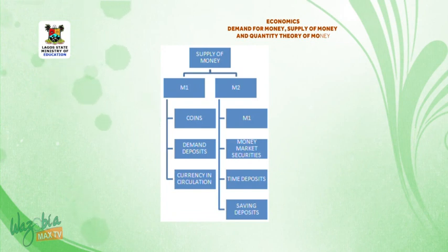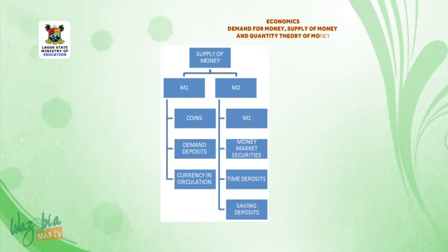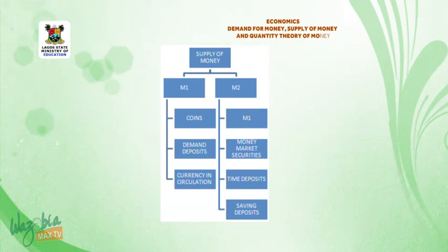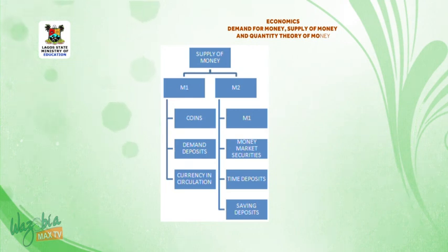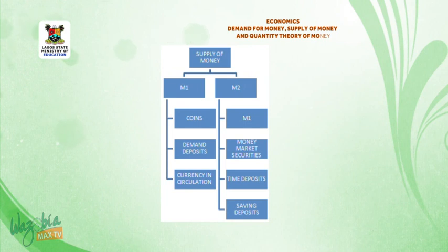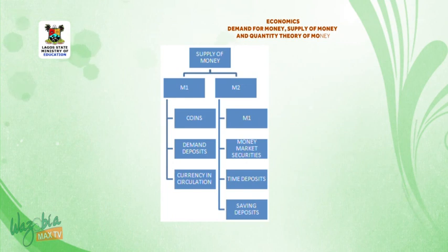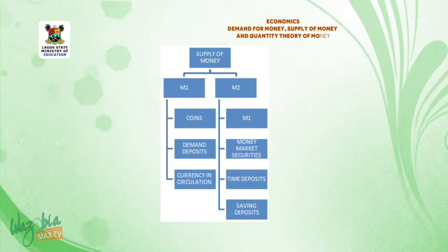M1 consists of: coins, demand deposits, and currency in circulation. M2 consists of: M1, money market securities, time deposits, and saving deposits.